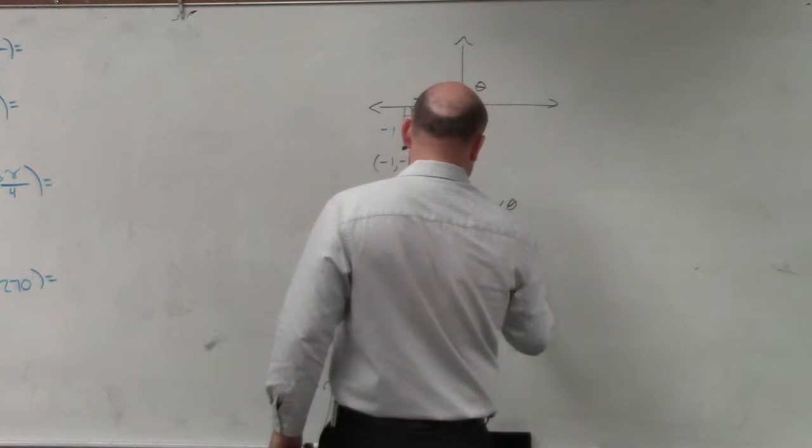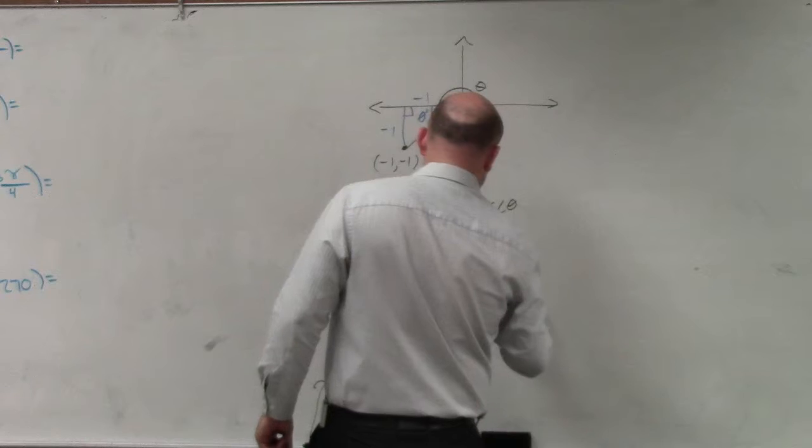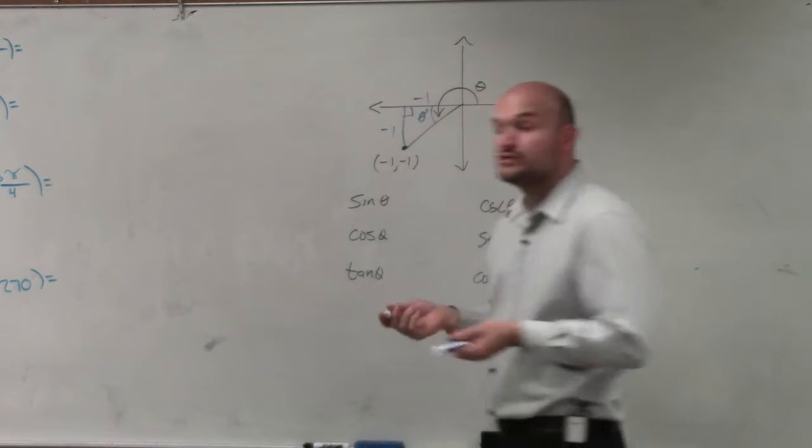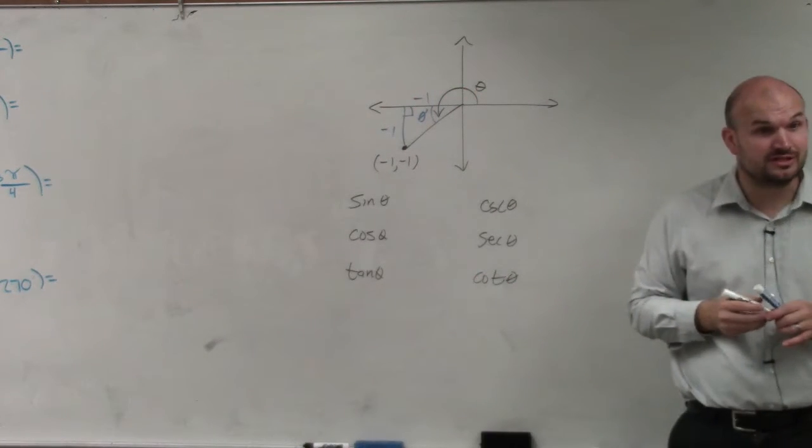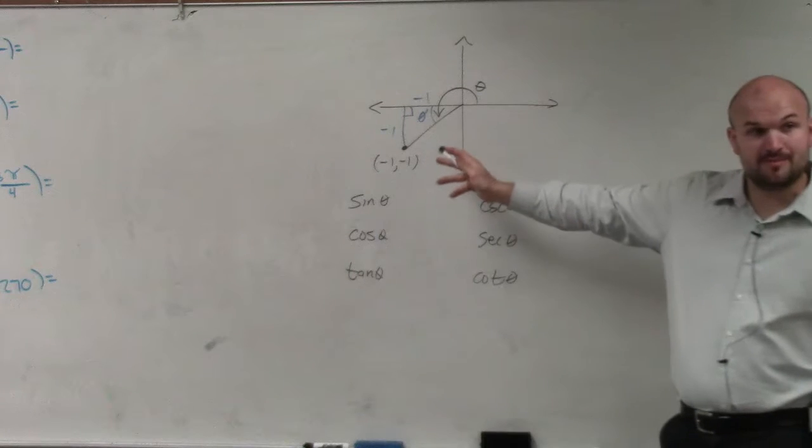tangent of theta, cosecant of theta, secant of theta, and cotangent of theta. So to find all six trigonometric functions, I know I'm going to need to find out what the hypotenuse is.